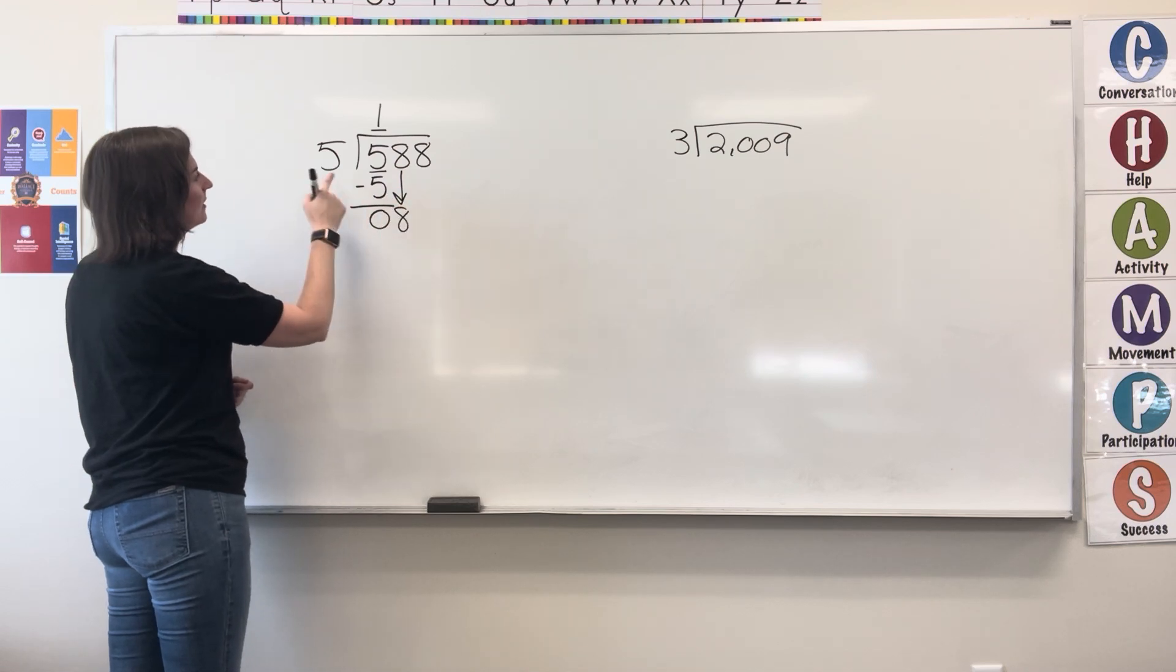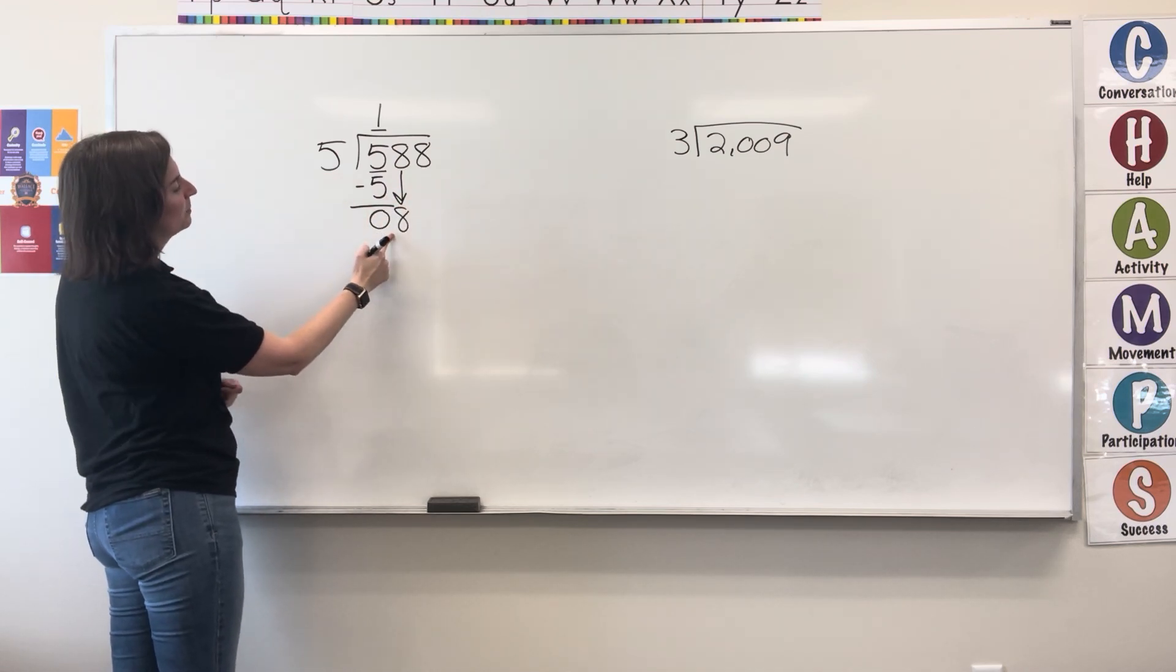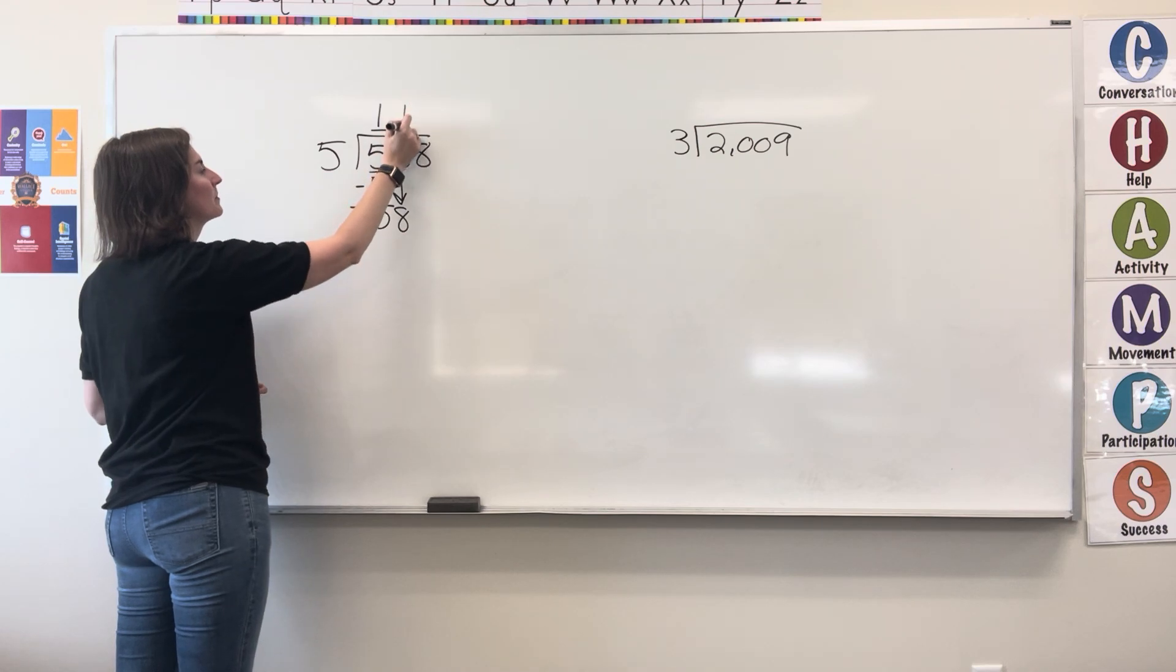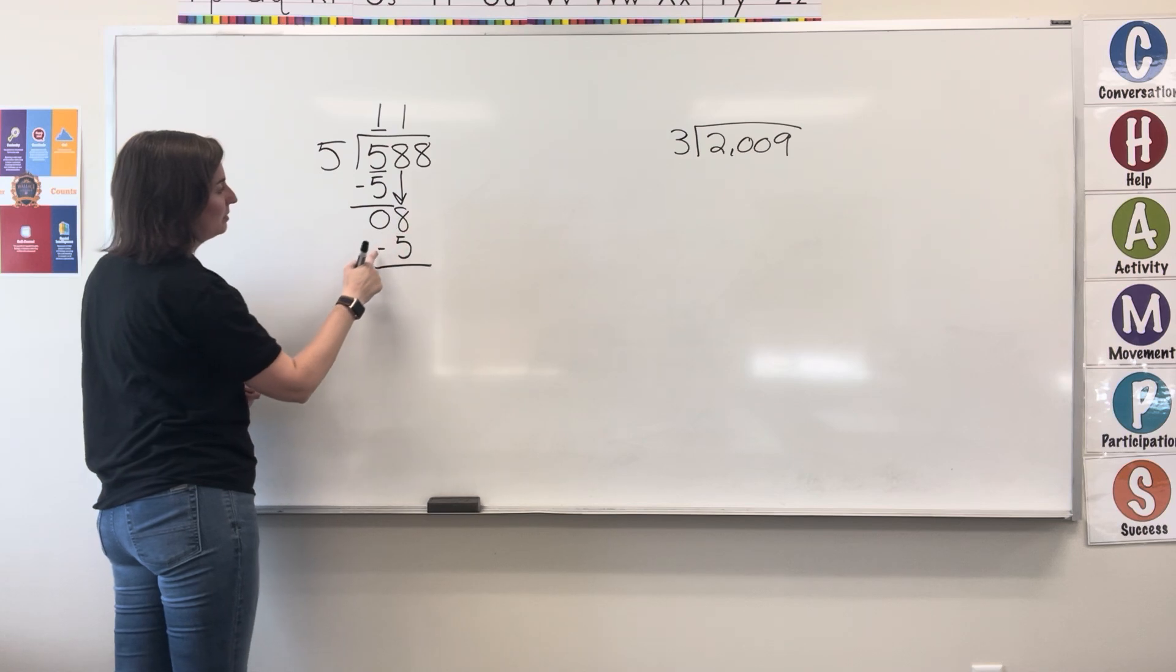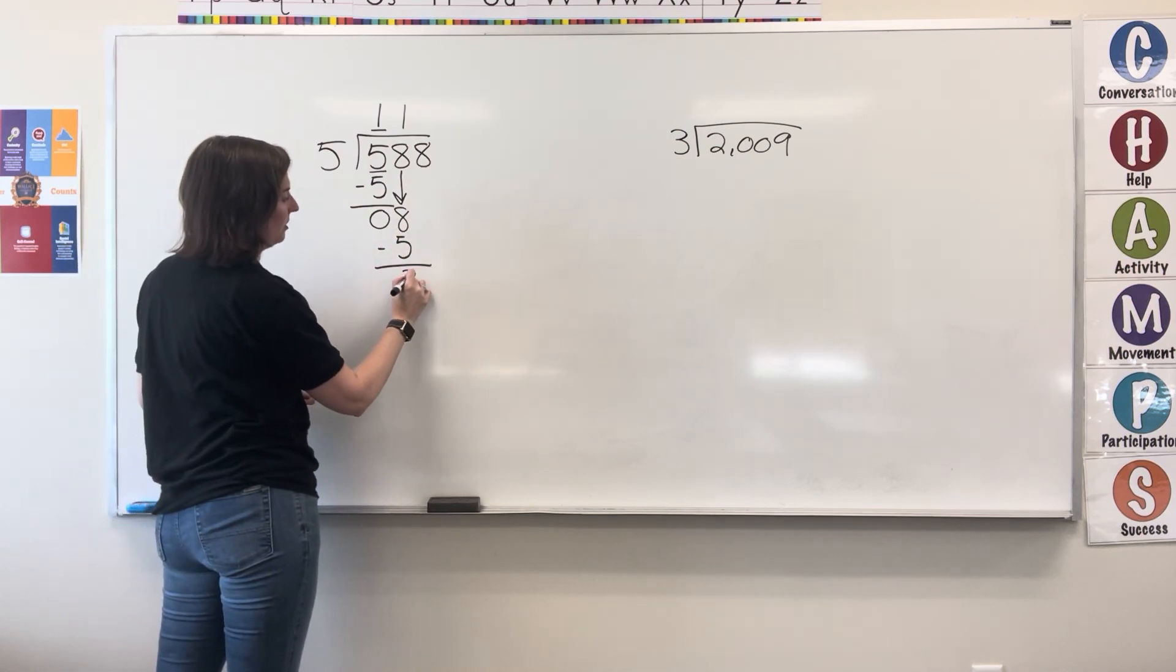Bring down the 8. 5 fits into 8 one time. 1 times 5 equals 5. Write the 5. Now subtract. 8 minus 5 equals 3. Write the 3.